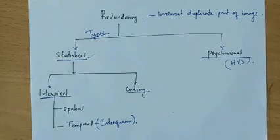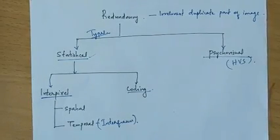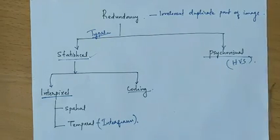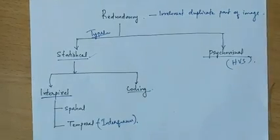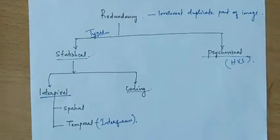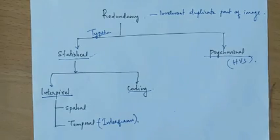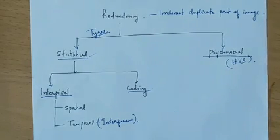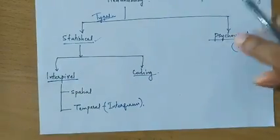Temporal redundancy is something related to video. Video means the successive movement of different image frames in a particular time period. In the video frame, successive information that is the same across frames will be identified and removed during compression.